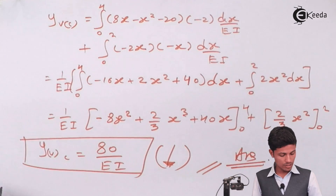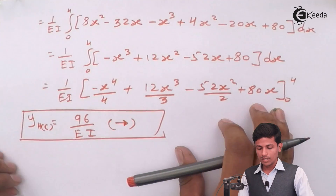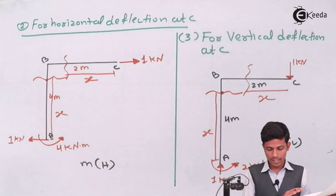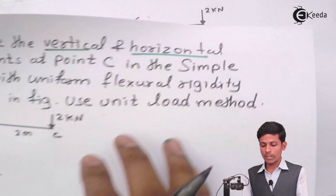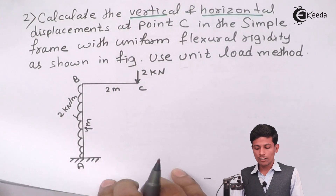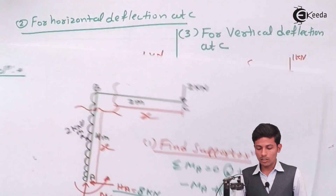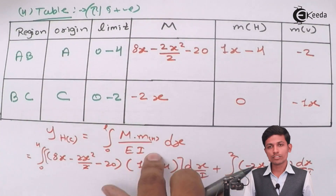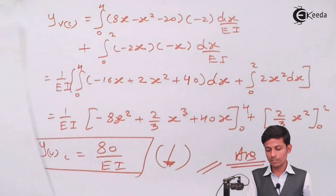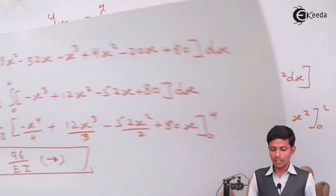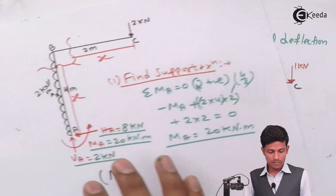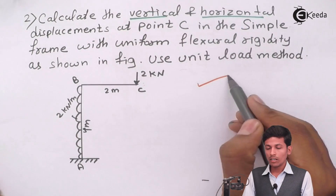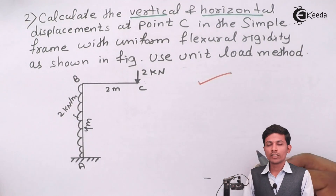The problem has been solved: first the FBD, then unit loads for horizontal and vertical deflections, then the table of M and m values, and finally applying the integration formula to find deflections at C. I have completed both the vertical and horizontal displacement calculations. I hope you understood — thanks for watching.